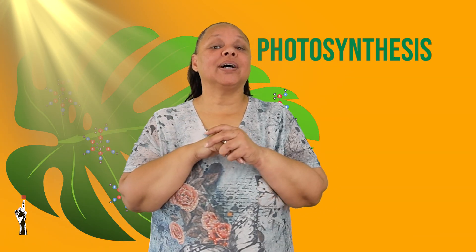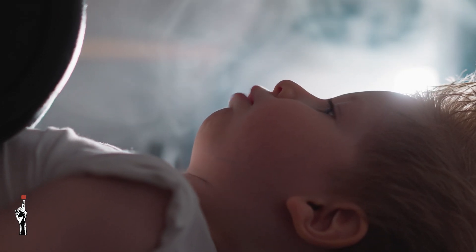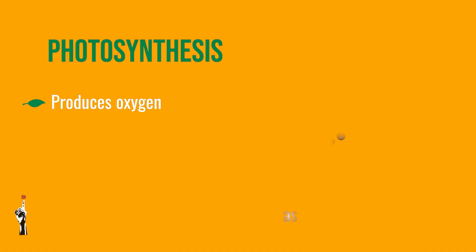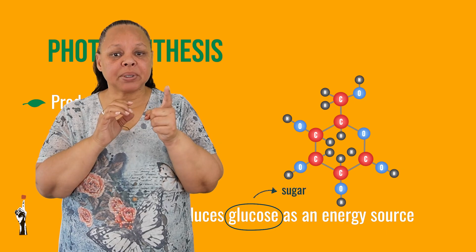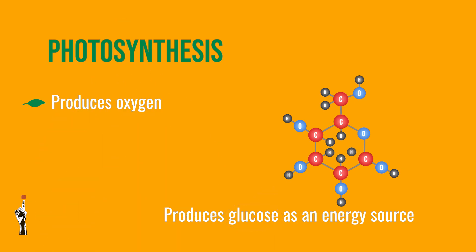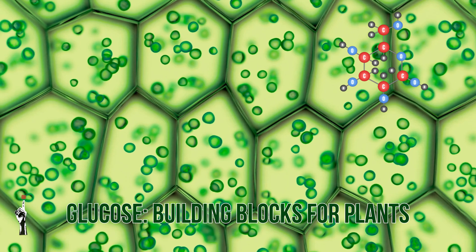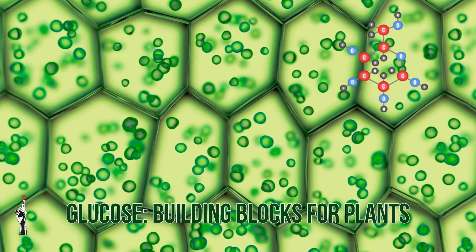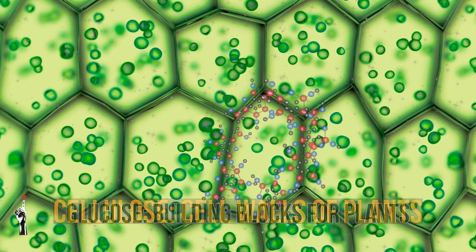Before we delve into where or how this process takes place, we will look at the biological importance of the process. Photosynthesis is responsible for the oxygen we breathe. It also produces glucose, which is a sugar that serves as the primary energy source for plants. Glucose is also a fundamental building block for plants — it's used to make other organic compounds necessary for the growth of plants, such as cellulose, which makes up the cell walls of plants.